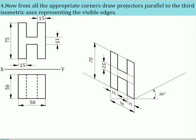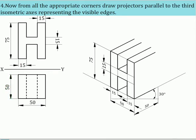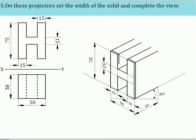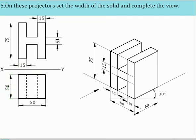From all the appropriate corners, draw projectors parallel to the third isometric axis representing the visible edges. On these projectors, set the width of the solid and complete the view.